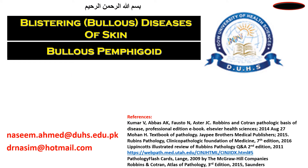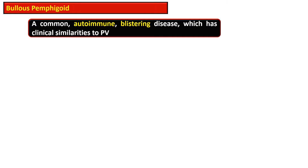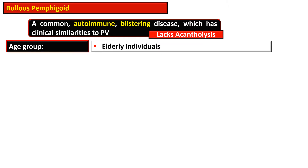In this series of videos we are going to discuss blistering or bullous diseases of the skin. In this video especially we will concentrate on bullous pemphigoid. Bullous pemphigoid is a common autoimmune blistering disease which has clinical similarities to pemphigus vulgaris but lacks acantholysis.